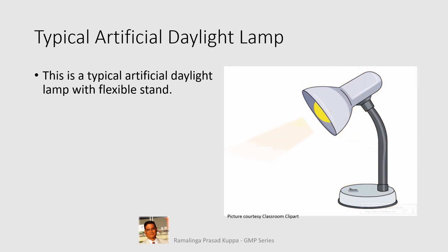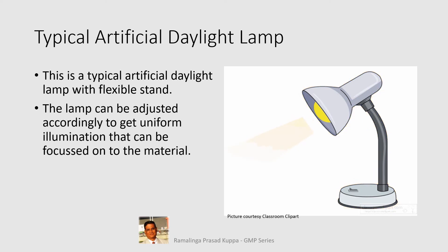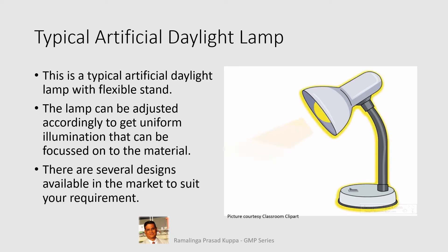This is a typical artificial daylight lamp with a flexible stand. This type of lamp is very useful as it can be adjusted to achieve uniform illumination focused on the material. The focus angle can be adjusted to get uniform illumination on the sample for testing. Several designs and models with different heights are available in the market to suit your requirements.